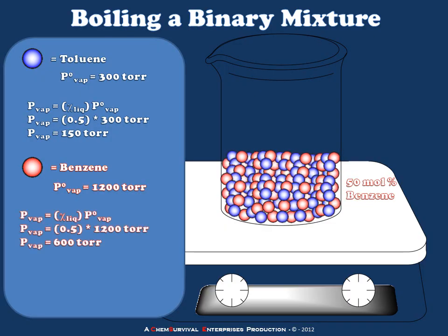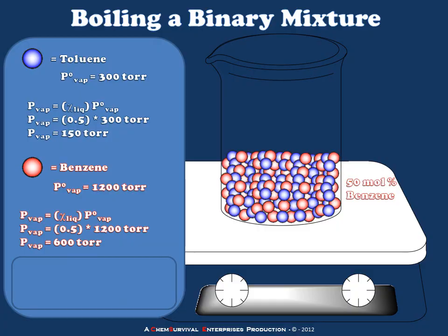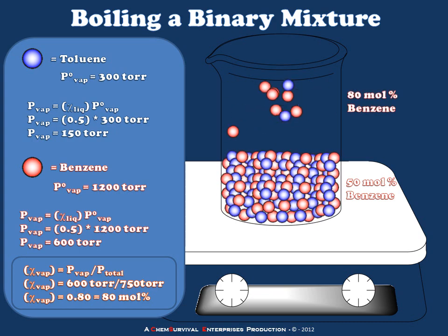Similarly, benzene would exert a vapor pressure equal to half that of pure benzene at this temperature — the pure benzene vapor pressure is 1200 torr, so benzene contributes 600 torr. Relying on the Ideal Gas Law to convert these partial pressures to a mole fraction, we arrive at the conclusion that the vapor above this liquid is not 50 mole percent benzene, but rather 80 mole percent benzene. So by boiling the mixture, we have created a vapor which is more concentrated in benzene than the original liquid.